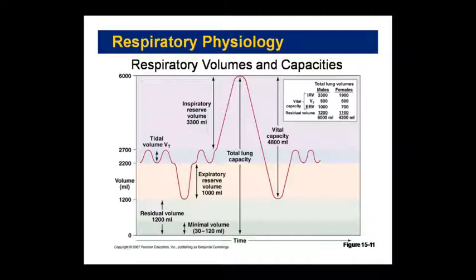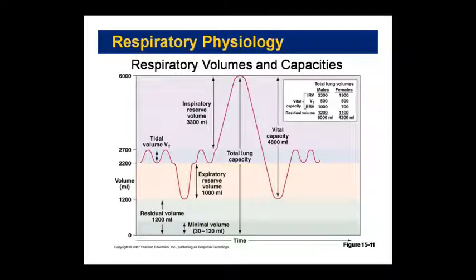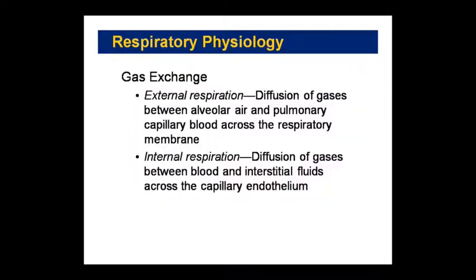Residual volume is always present. Looking at the graph: tidal volume is around 2000–2700 ml; expiratory reserve volume is 1000 ml; inspiratory reserve volume is 1300 ml; vital capacity is approximately 4800 ml; and total lung capacity can also be seen. There is also a chart showing male and female differences — total lung capacity for males is about 6000 ml and for females about 4200 ml.